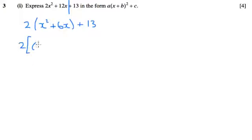And in order to complete the square of this, we need to halve the coefficient of x in that bracket and write it in a square bracket. So that's going to be x plus 3 squared.